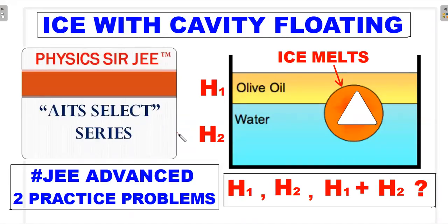Welcome back to the channel Physics Sergi. Here we are in a select series addressing a long-pending problem requested by many students — an ice block with a cavity floating in immiscible oil and water liquids. Over time, the ice melts and we investigate the change in height levels of the oil and water. This is a very interesting JEE Advanced level concept, and we'll top it off with two practice problems.